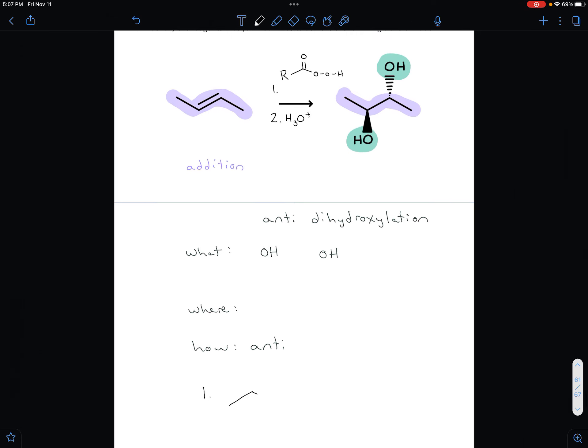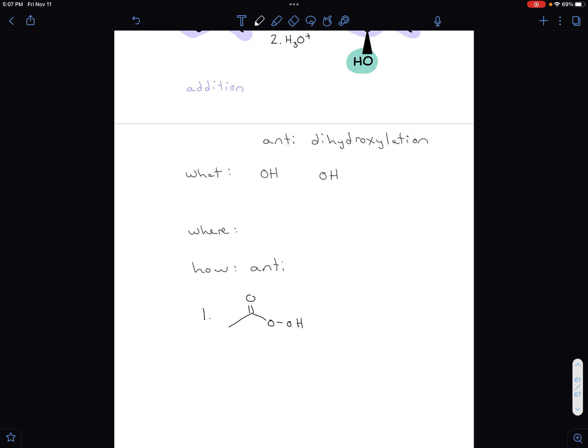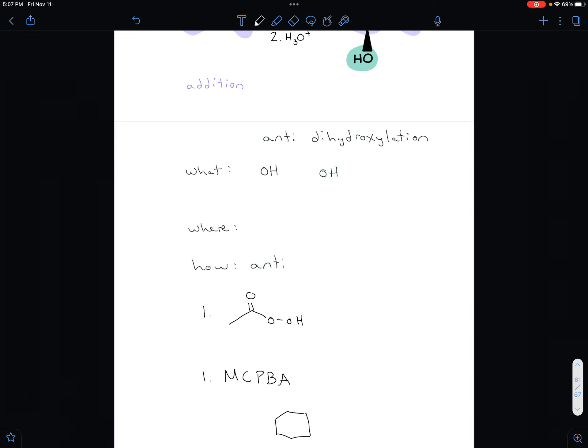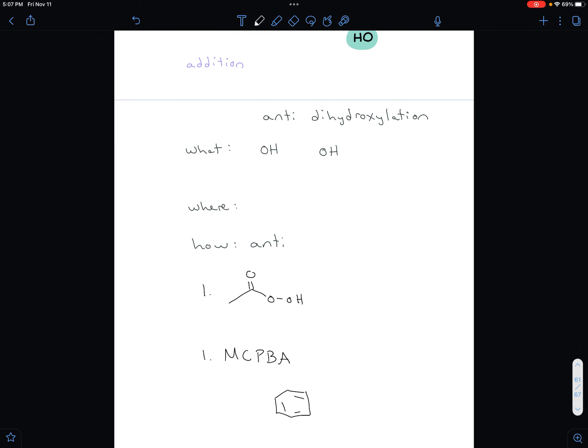A specific peroxy acid, an example of one could be peroxy acetic acid, which is this peroxy acid here. Or you could write MCPBA. If you remember, that's metachloro-peroxybenzoic acid.